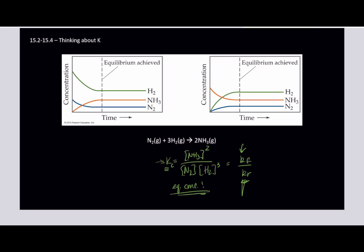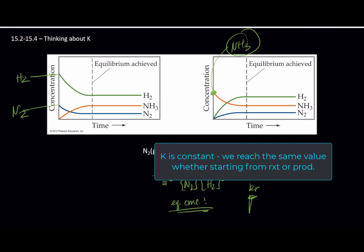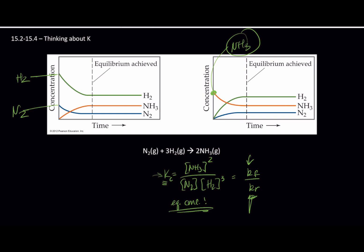So it is the equilibrium constant — it is a constant. If we look at these charts, for example we can start with some reactant. Here, we start with some H2 and some N2 and we make some NH3. We end at those concentrations when equilibrium is reached, meaning the concentrations no longer change, and the rate of the forward process is equal to the rate of the reverse process. Likewise, if we start with just NH3, we can produce H2 and N2. In this particular graph, they chose a concentration of NH3 such that our H2 and N2 concentrations end up being the same — so K is constant.